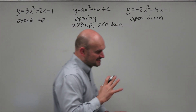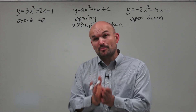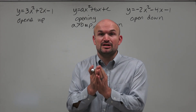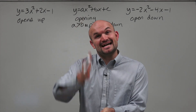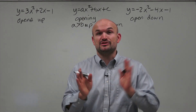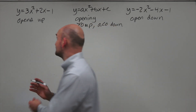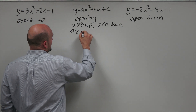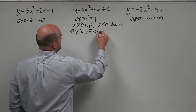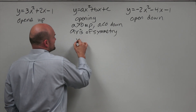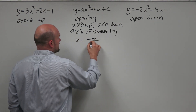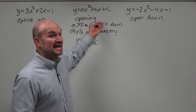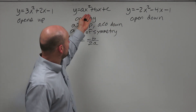The next important piece to understand about a parabola is going to be the axis of symmetry — that's the line of symmetry that cuts the parabola in half. The axis of symmetry takes on the form x equals negative B divided by 2 times A. The B and A come from the standard form of your equation.